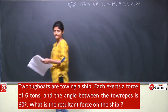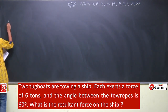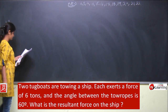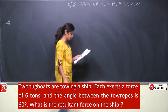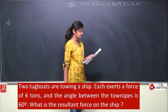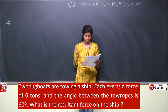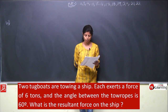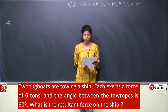Let us start with the second question. Two tugboats are towing a ship; each exerts a force of 6 tons and the angle between the tow ropes is 60 degrees. What is the resultant force on the ship?